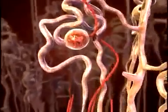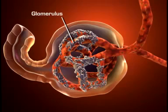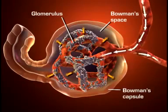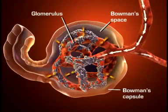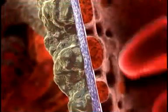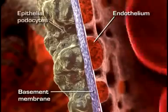The glomerulus is a unique, high-pressure mass of capillaries that filters the blood. The glomerulus is encased in a thin, double-walled capsule called Bowman's capsule. The space inside the capsule and surrounding the glomerulus is called Bowman's space. Plasma-like fluid is filtered from the capillary blood into Bowman's space through the glomerular filtration membrane, which consists of three layers of capillary wall: the endothelium, the basement membrane, and the epithelium.